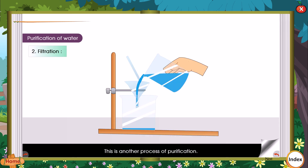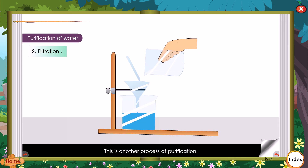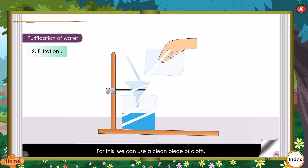Filtration is another process of purification. At home, while pouring tea, you filter it through a strainer. For this, we can use a clean piece of cloth. In school laboratories, students use filter paper to remove insoluble impurities from liquids.